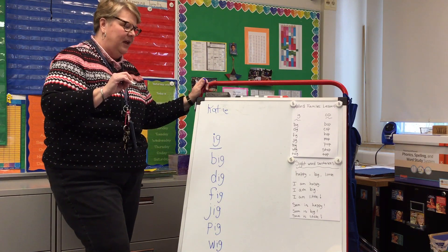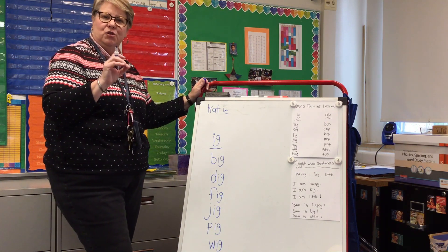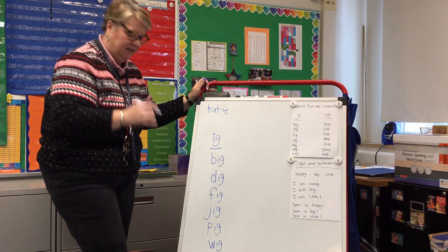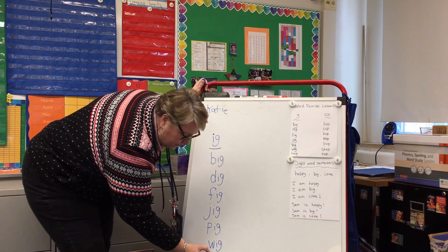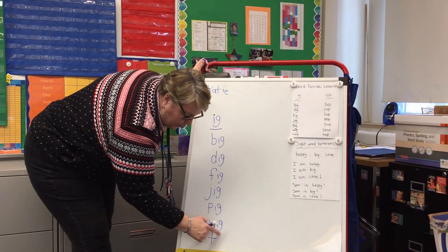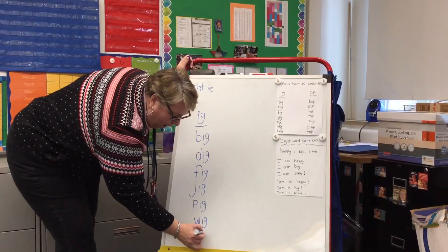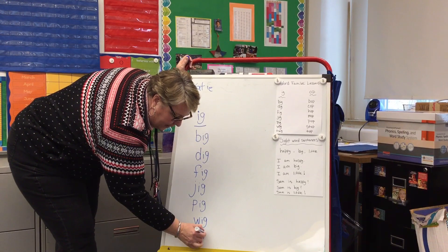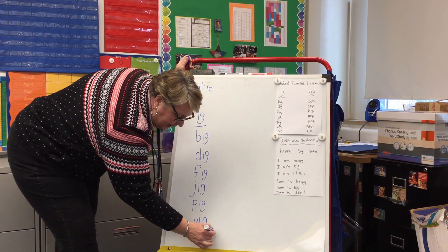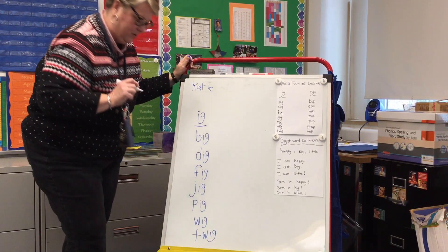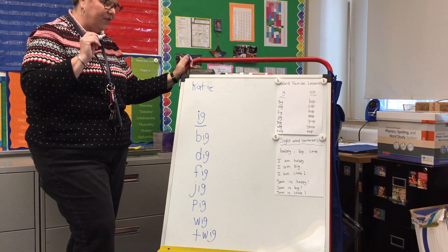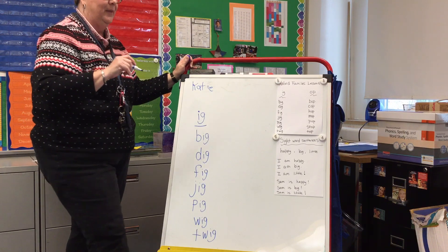And if you wanted to do a bonus one, you could do 'twig,' like a little stick — T like turtle. And then W like window, I like iguana, G like goat. There's your first word family.